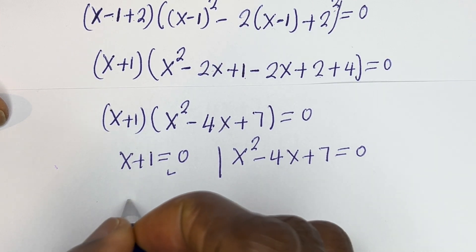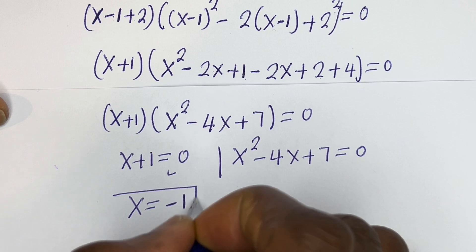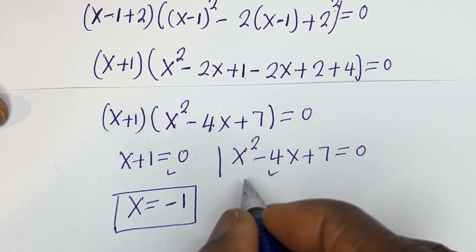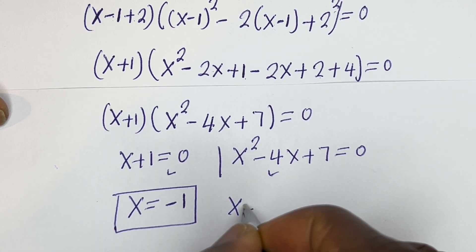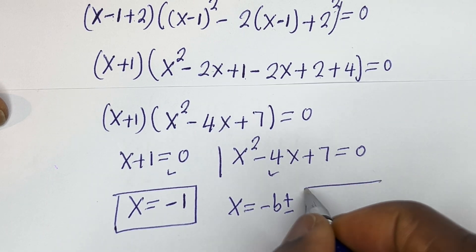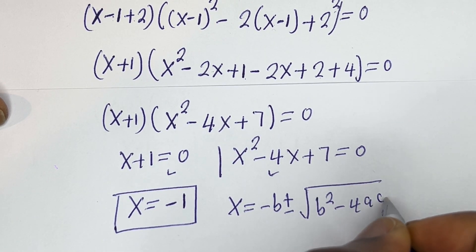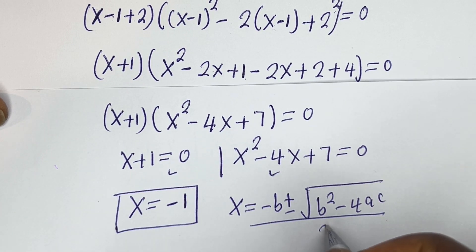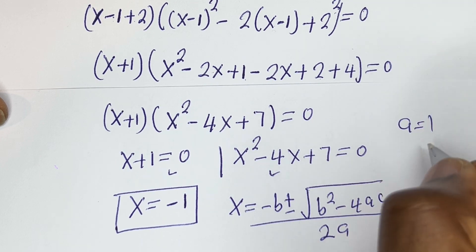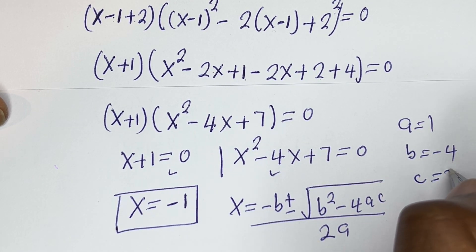From x plus 1 equals 0, x is equal to minus 1. This is the first value of x. The second sub-case, x squared minus 4x plus 7 equals 0, is a quadratic equation. We solve using the quadratic formula: x equals negative b plus or minus square root of b squared minus 4ac, over 2a. Here a equals 1, b equals minus 4, c equals 7.